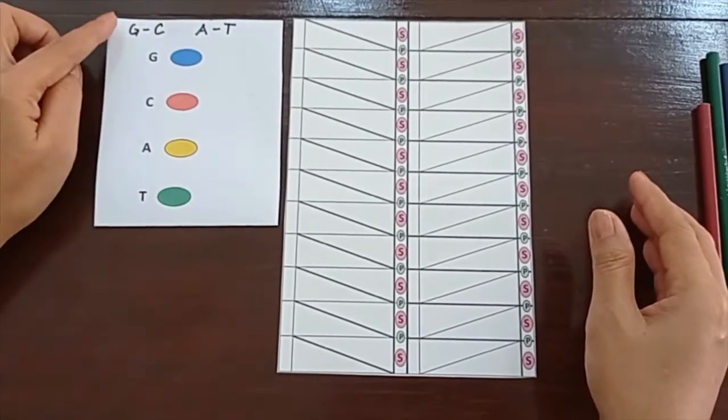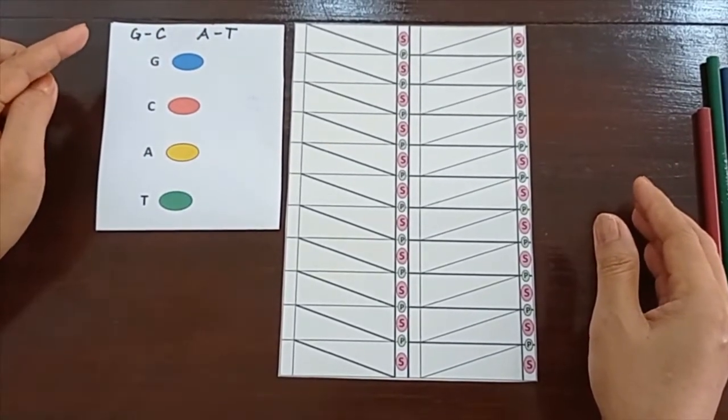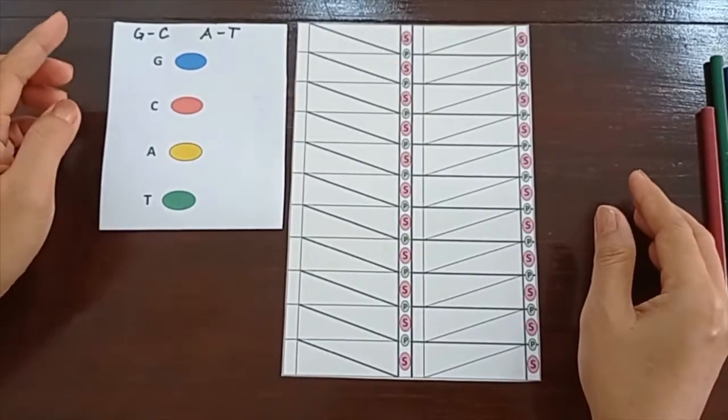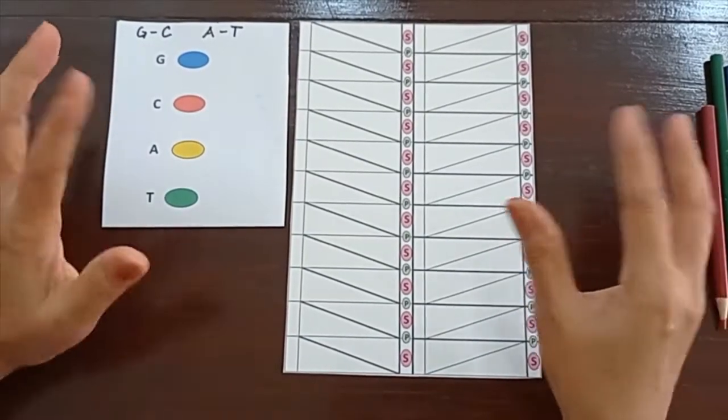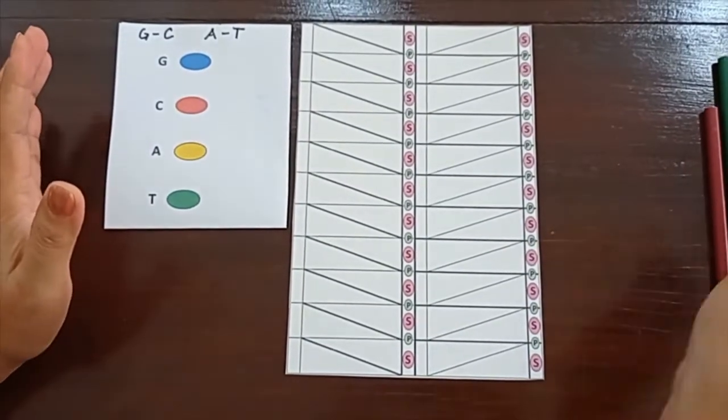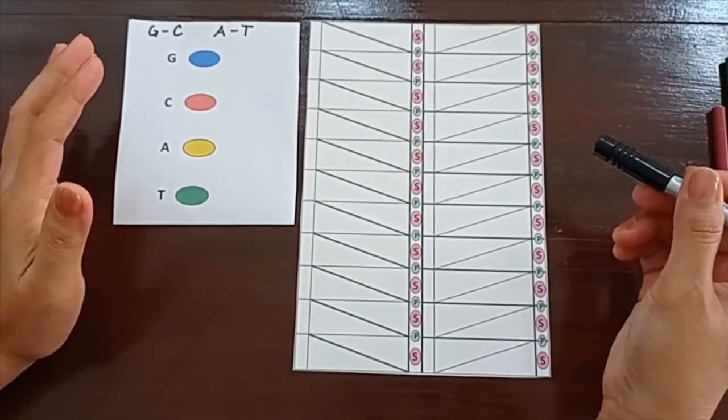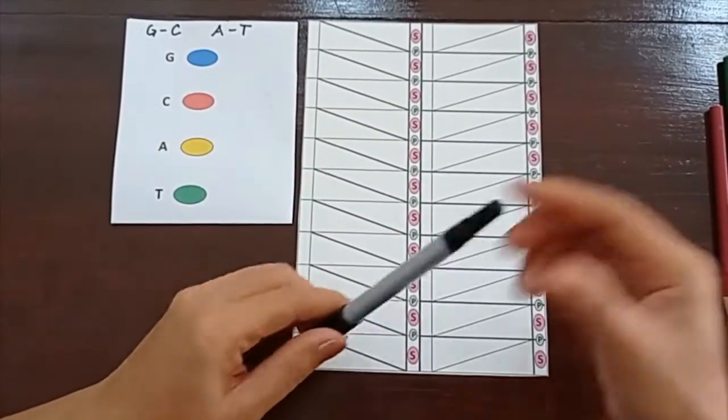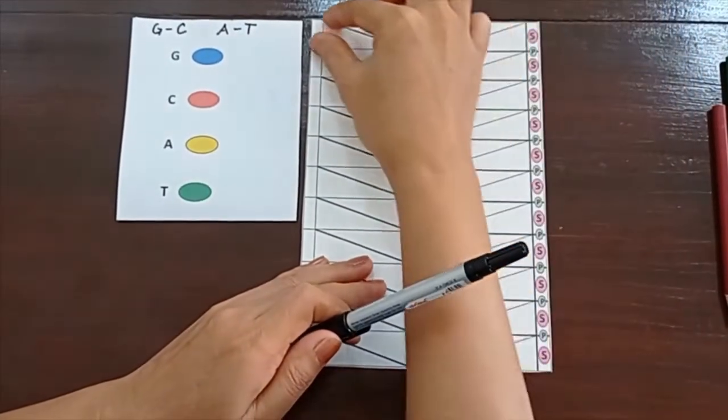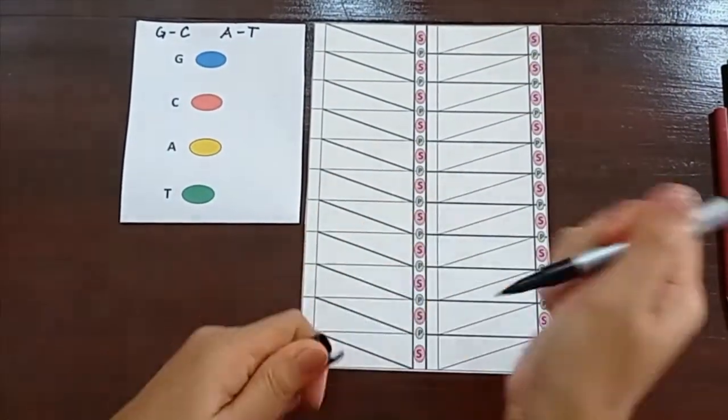T with A, G with C. So, first, we write the DNA sequence that we want. It doesn't matter what order as long as we follow the base pairing rule. Remember to follow the darker lines. Here, the horizontal, and here, the diagonal lines.